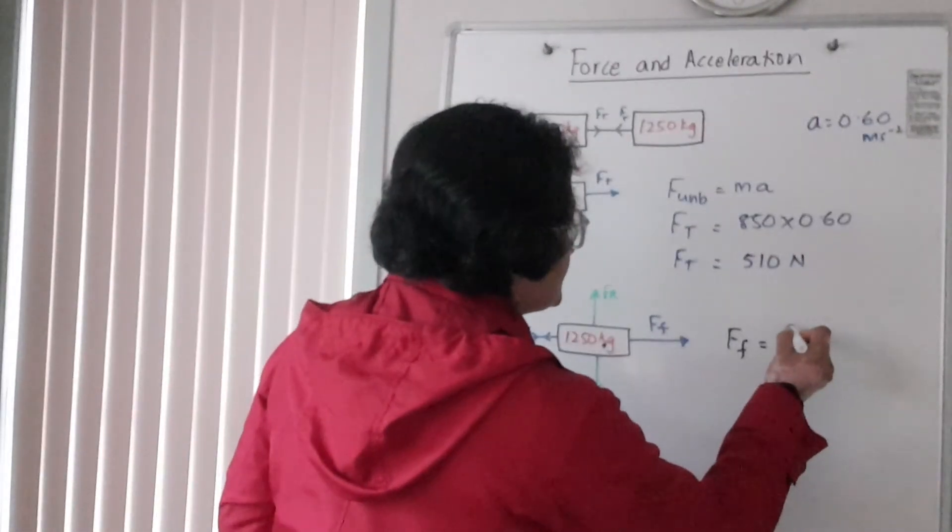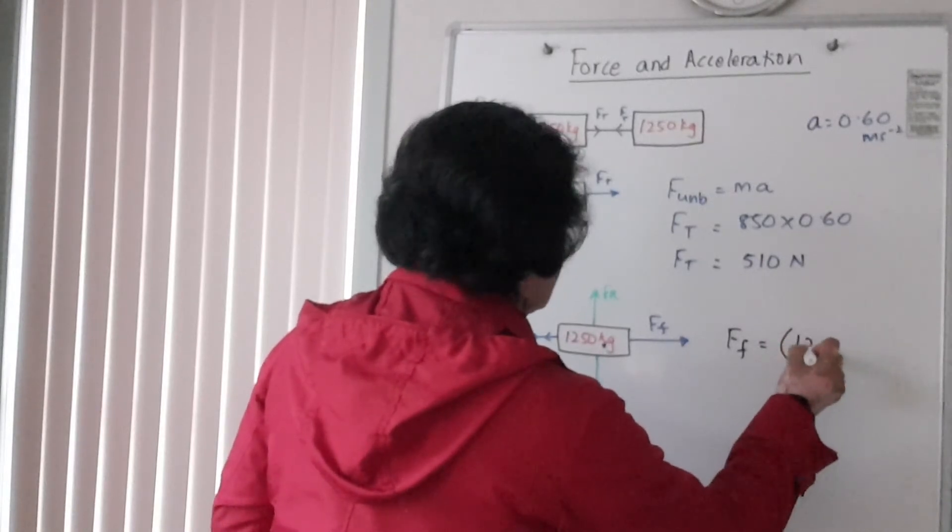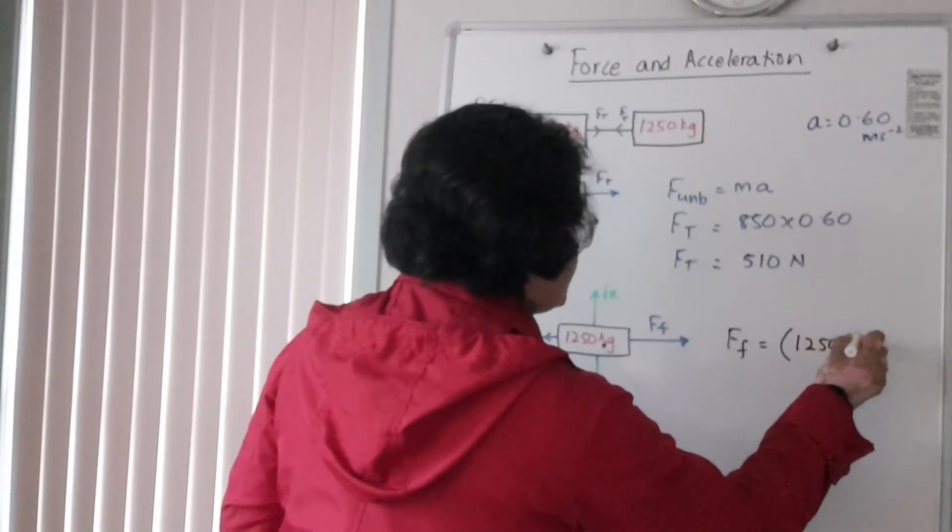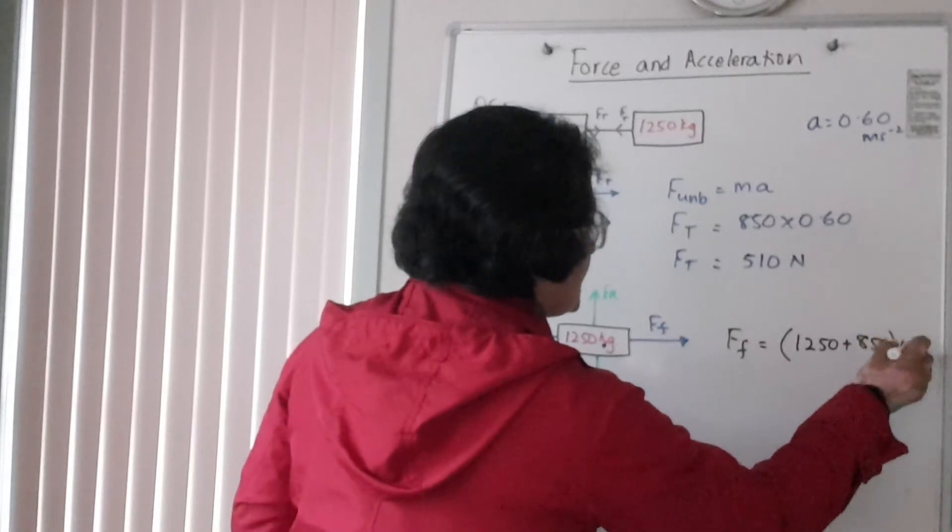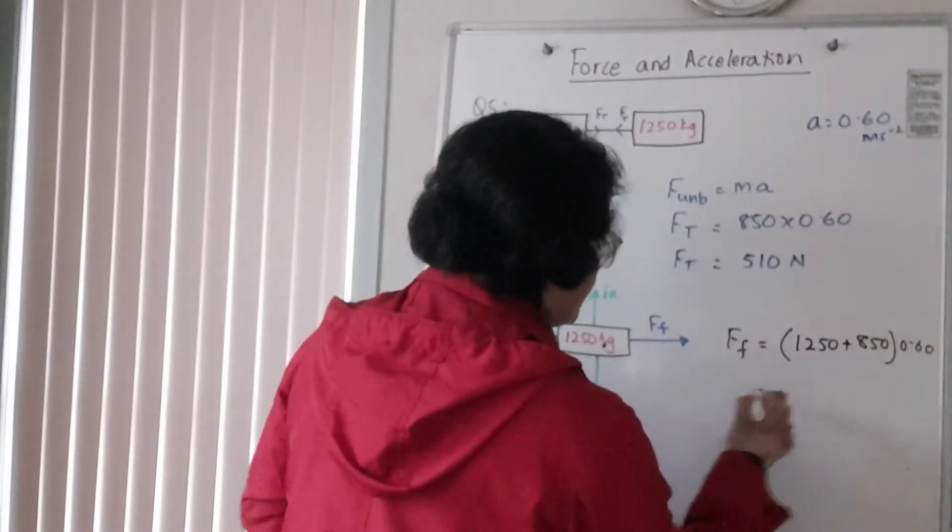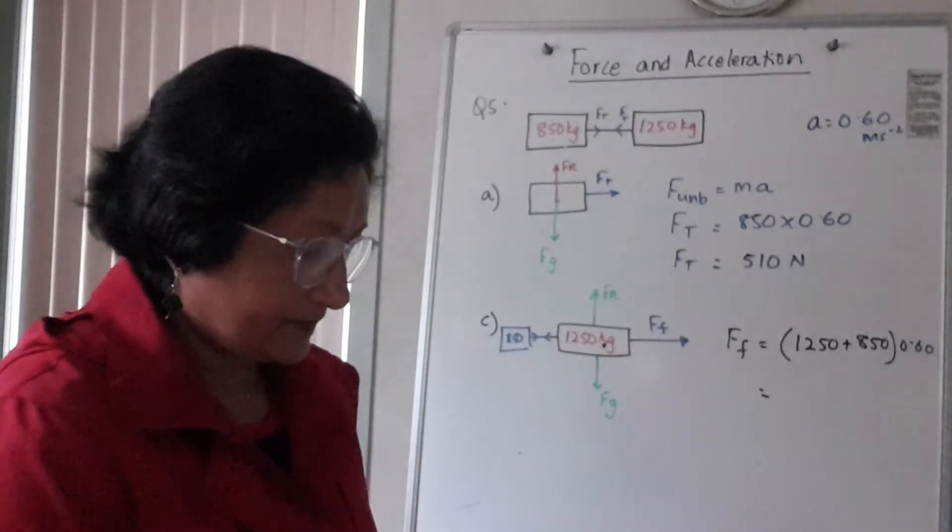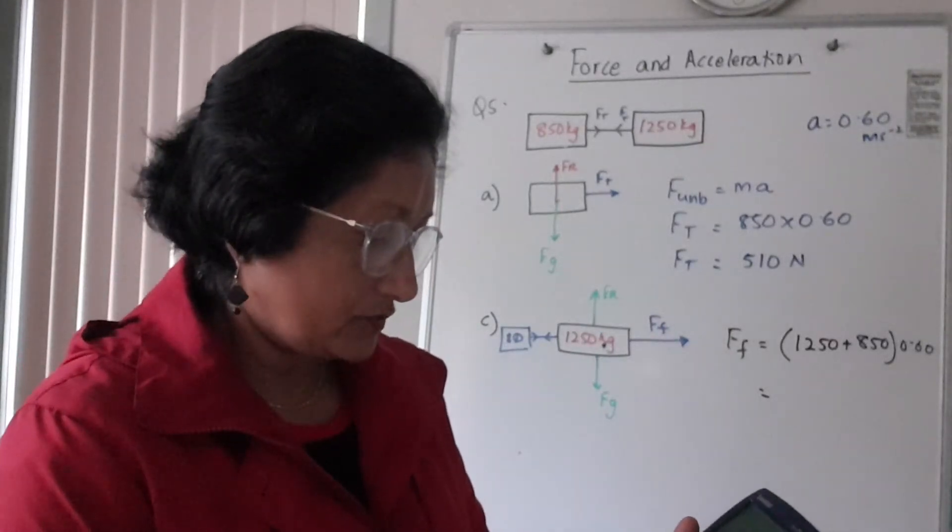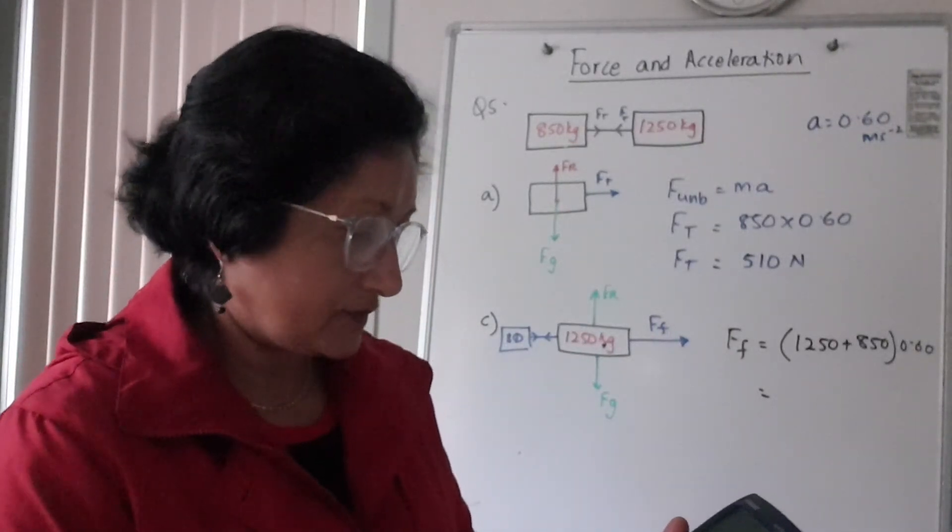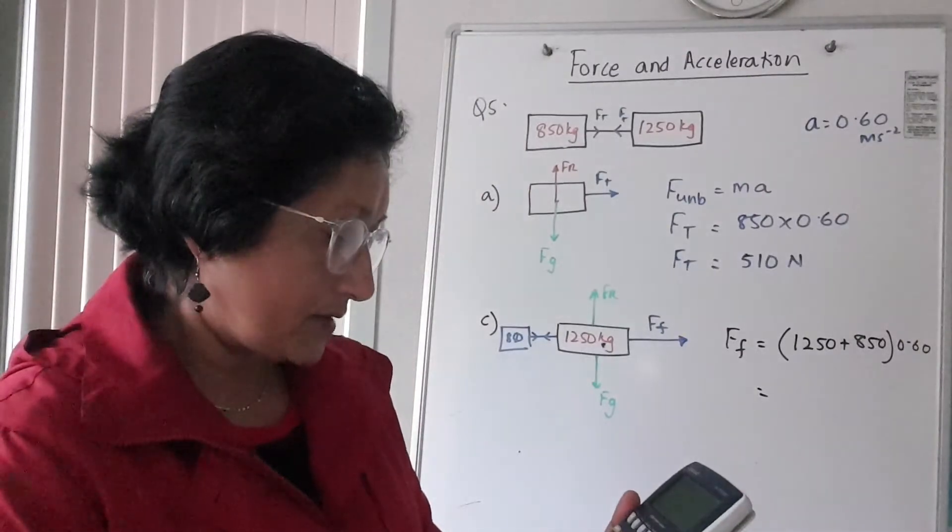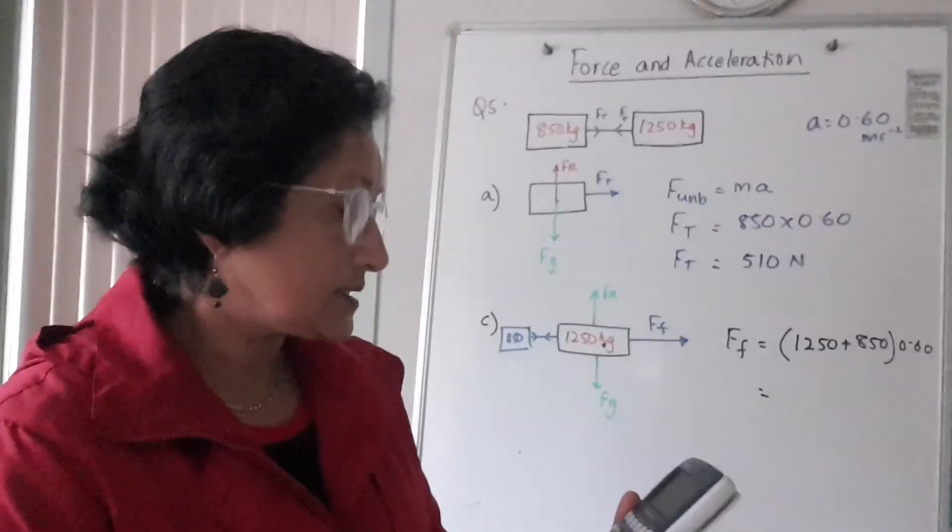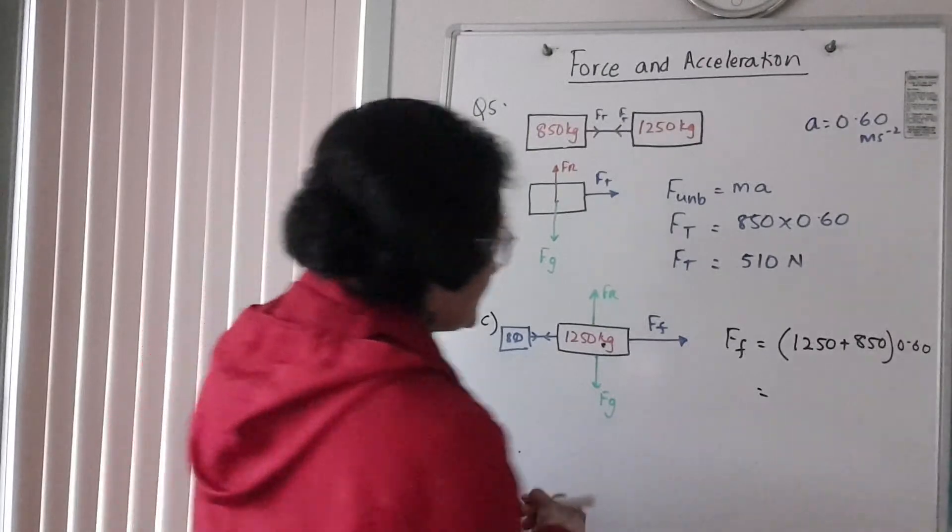So what do I get? It's like 1250 plus 850, I get 2100 times 0.60, I get 1260.